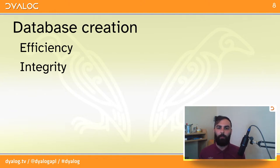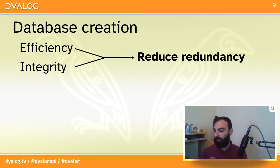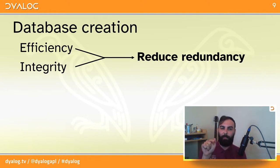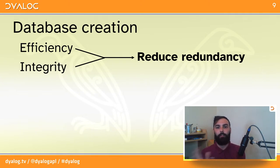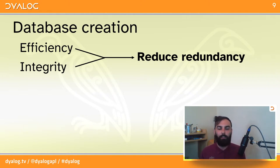In terms of relations, if some data depends on some other data, some database systems have ways to know that, so you can't accidentally delete data that another relationship depends on. For both of these, reducing redundancy is quite useful. Reducing redundancy means not having the same data duplicated in multiple places. That has obvious implications for being space efficient. But also for integrity — if you have the same data in multiple places, there's a chance you might update it in one place and forget to update the copy elsewhere, and now you have mismatching records.